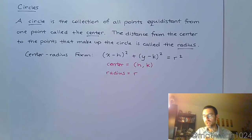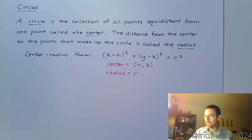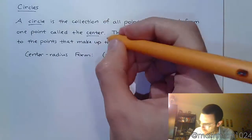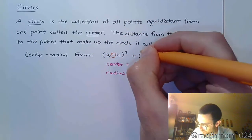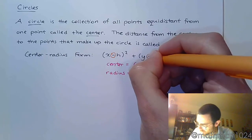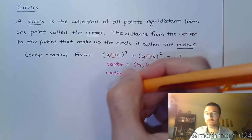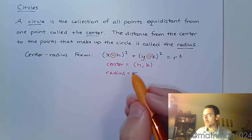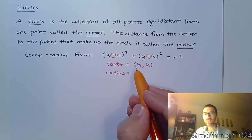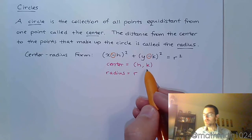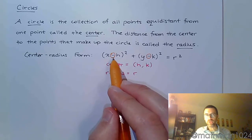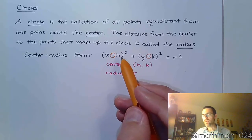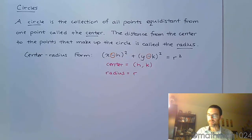One of the things you need to know about the center-radius form is that you have subtraction — x minus h and y minus k. So when it comes to identifying the center as h and k, you have to do the opposite of what you see. We're going to be seeing that here in just a moment.